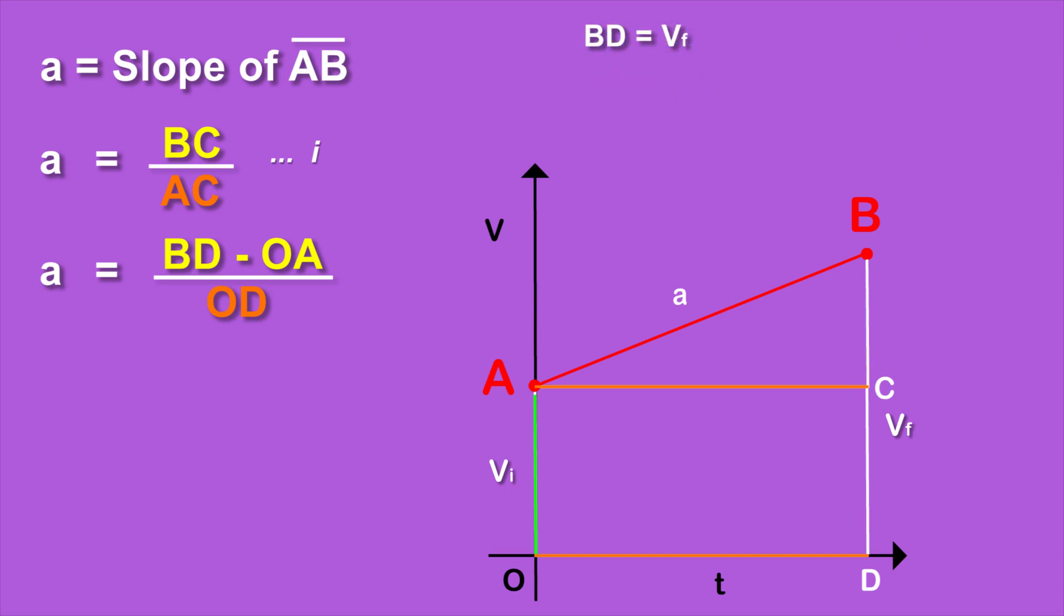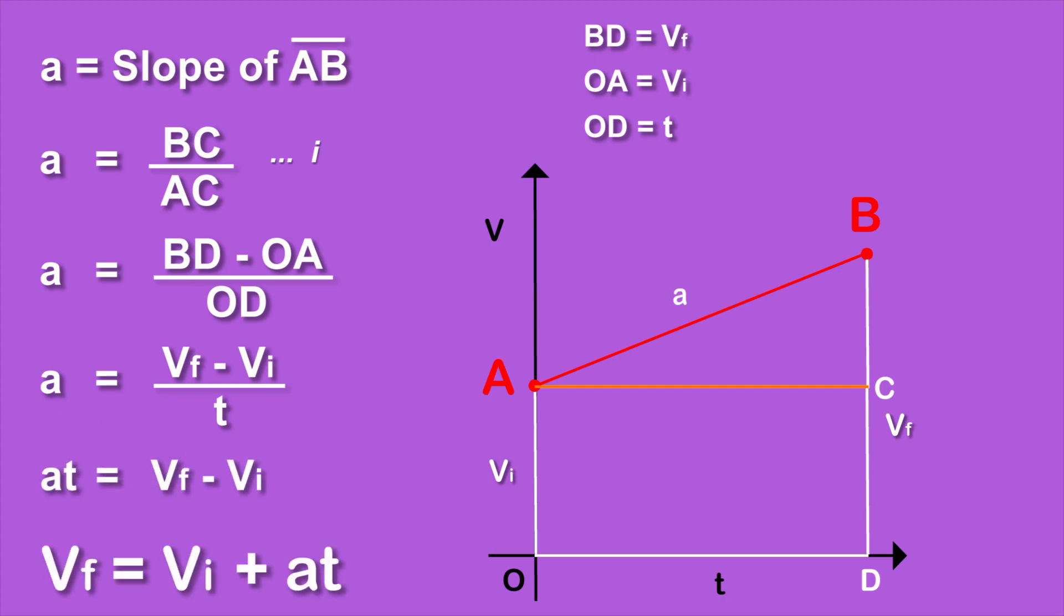In the graph, BD is Vf, OA is Vi, and OD is t. So we get a equals Vf minus Vi over t. Now we simplify the equation by simple mathematical rules and we get Vf equals Vi plus at.